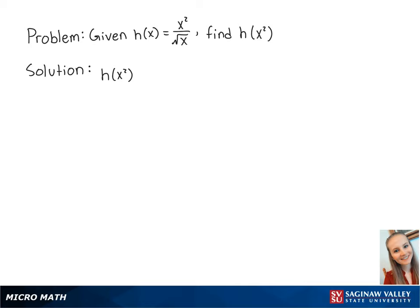For this problem, we want to find h of x squared when h of x is equal to x squared over the square root of x. To find h of x squared, we need to plug in x squared for x.